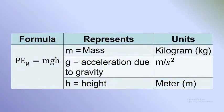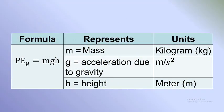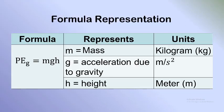Here is a table showing the formula and unit of each symbol. The formula for gravitational potential energy is mgh, where m represents mass in kilograms, g represents the acceleration due to gravity in meters per second squared, and h represents the height of the object above the chosen reference in meters.